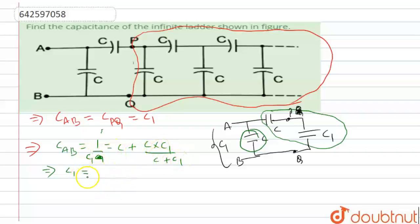You will be getting a quadratic equation. What will be that quadratic equation? That quadratic equation you will be getting as C1 squared minus C·C1 minus C squared equals zero. Now from there you can find C1.